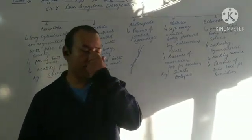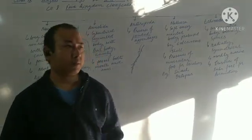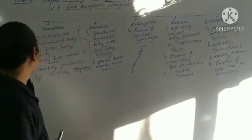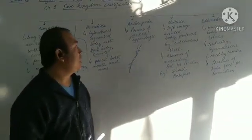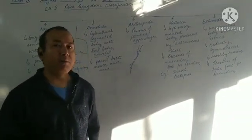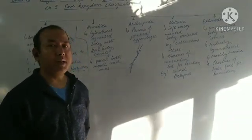And they are Nematoda, which is also called as Aschelminthes, then after that Annelida, then after that Arthropoda, then followed by Mollusca, and then finally Echinodermata.